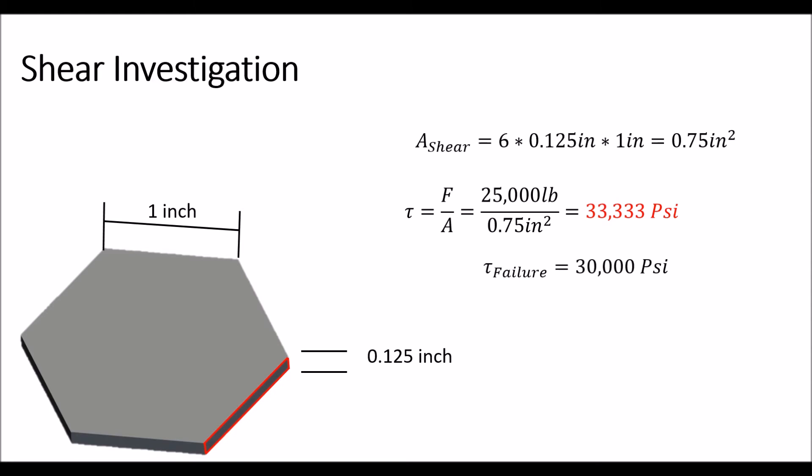Now that is over the shear failure rating of the aluminum at 30,000 psi. That's actually good because that means the piece fails due to shear. So that means the punch works the way we want it to.